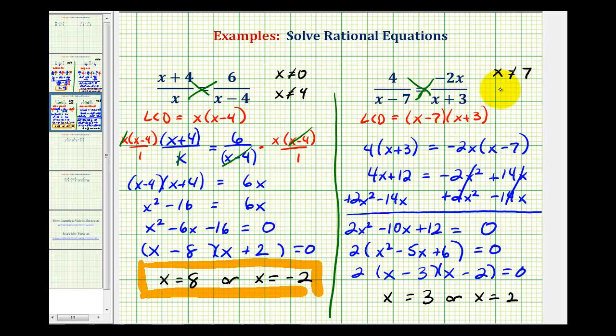And if x was equal to negative 3, this denominator would be equal to zero. So those are our excluded values, neither of these occurred in our solution. Therefore, our two solutions here are valid.